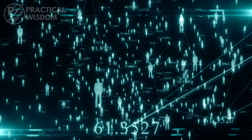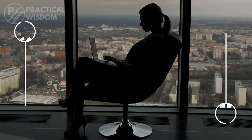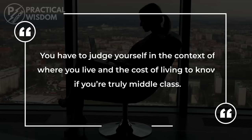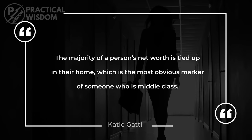Due to a growth in population at the extremes of the economic spectrum, the middle class is diminishing. You have to judge yourself in the context of where you live and the cost of living to know if you're truly middle class. Money with Katie's Katie Gotti explained that the majority of a person's net worth is tied up in their home, which is the most obvious marker of someone who is middle class. In other words, you're middle class if your net worth is $500,000 and your home accounts for $450,000 of that.